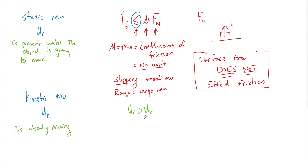You might have experienced this in real life. Maybe your car broke down and you wanted to move it to the side of the road — you start rocking that car back and forth, and then once you get it going, it's easy to keep going. Or if you've ever pushed a sled, it's always easier to keep an object moving than to get it moving. And the reason is that mu_static is always greater than mu_kinetic.